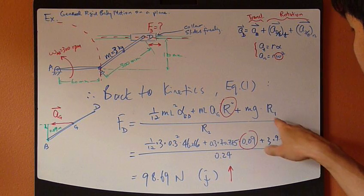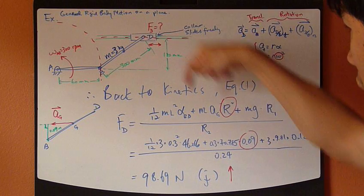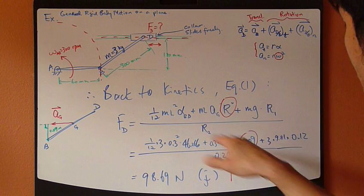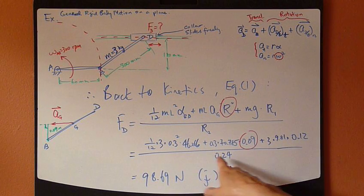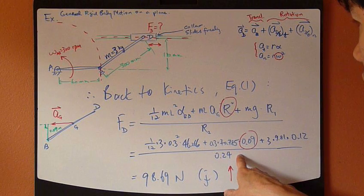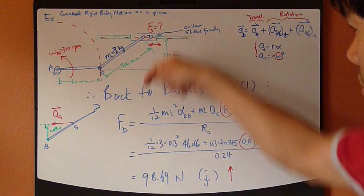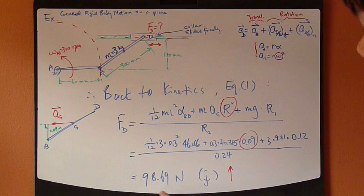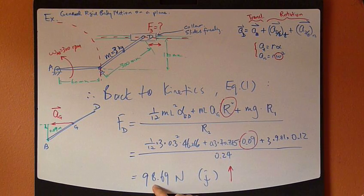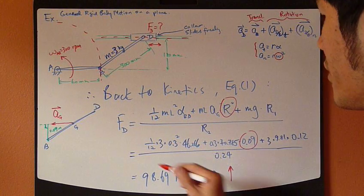Which is the distance between the weight vector and the point B, which is this distance right there. This is 0.24, so crunch number, that is the answer.